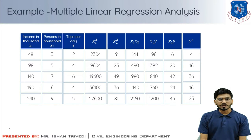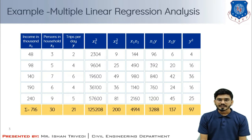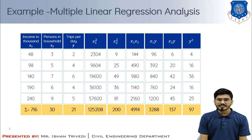Taking the summation of all entries, we get: sigma x1 = 716, sigma x2 = 30, sigma y = 21, sigma x1 squared = 125208, sigma x2 squared = 200, sigma x1x2 = 4914, sigma x1y = 3288, sigma x2y = 137, and sigma y squared = 97. Make sure to write the correct digit in the correct place so your calculations and table remain accurate.